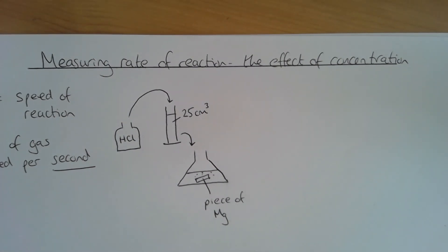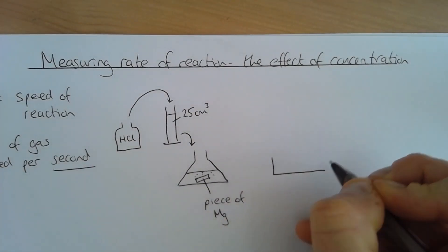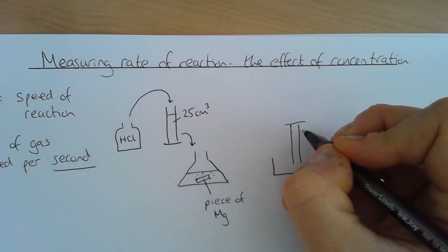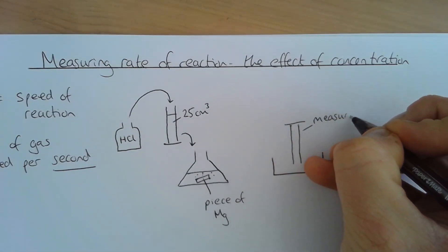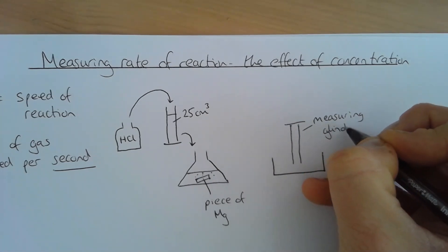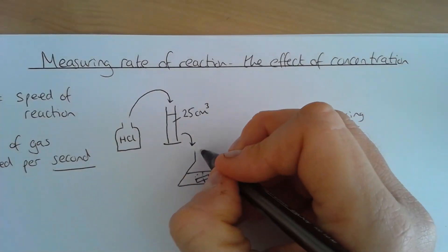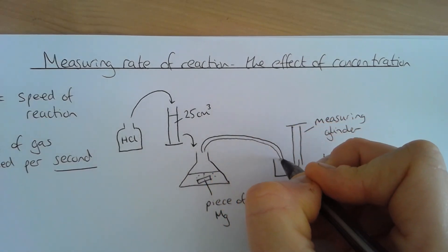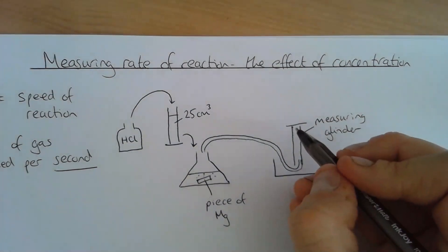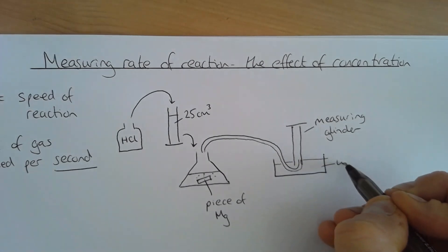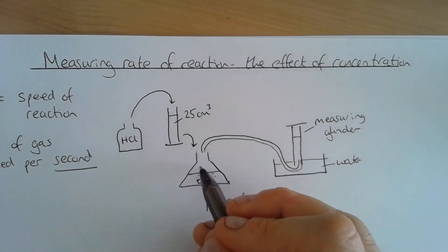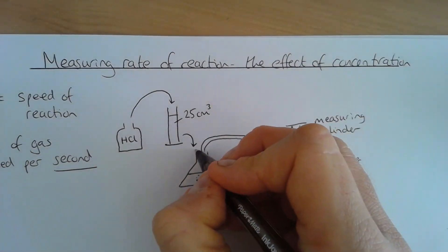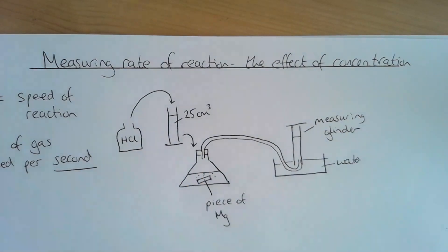Now we need to measure how quickly that hydrogen gas is produced. The way we do this is we get a big bowl of water and put into it another measuring cylinder that has also been filled with water. We have a tube coming out of our conical flask that goes into the bottom of the measuring cylinder. As the gas is produced, it's going to push the water out and fill it up with hydrogen gas. To make it airtight, we need to put a bung on the measuring cylinder.